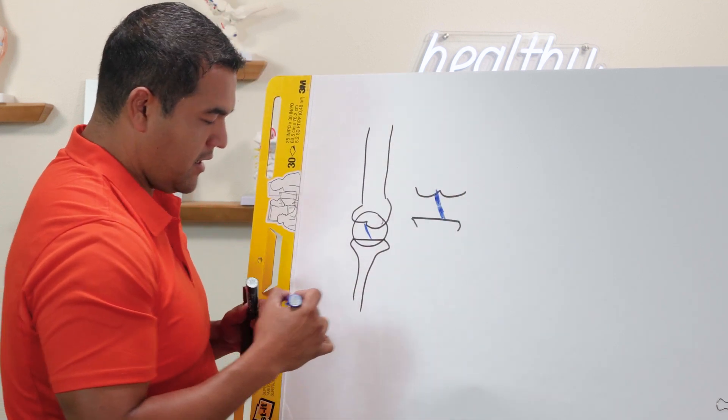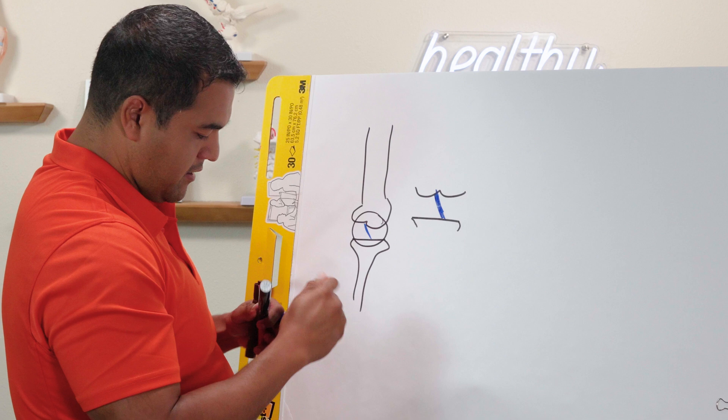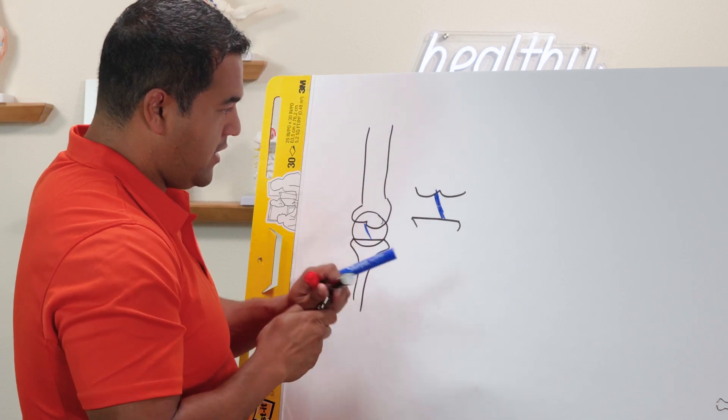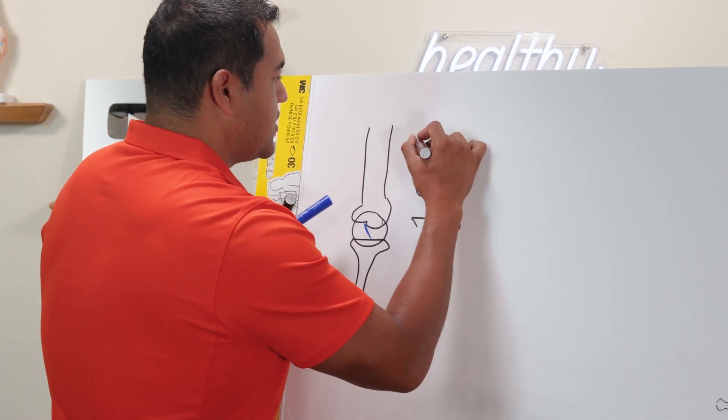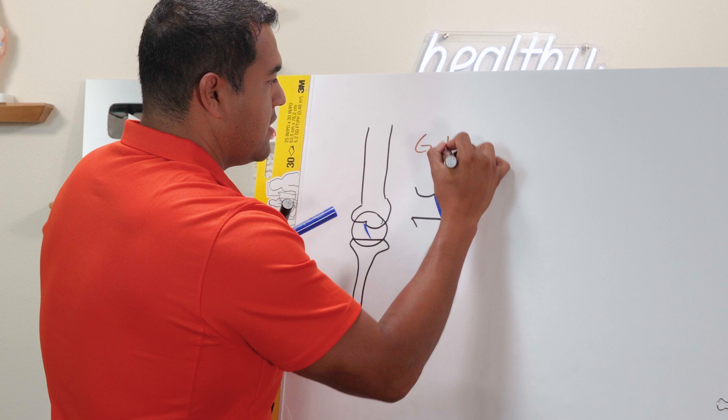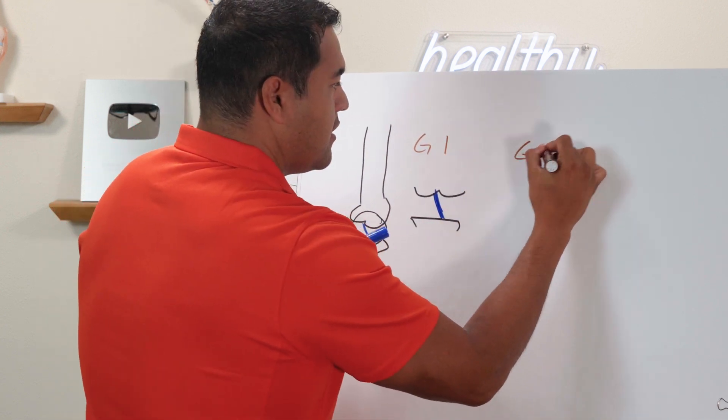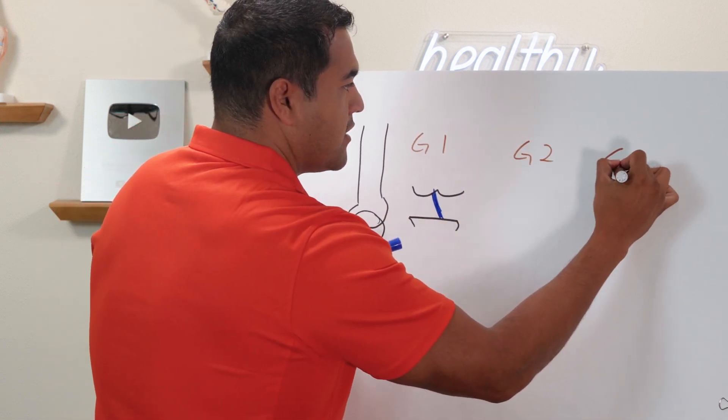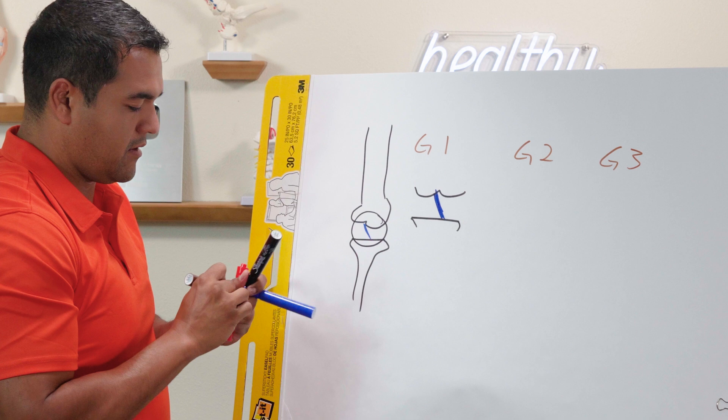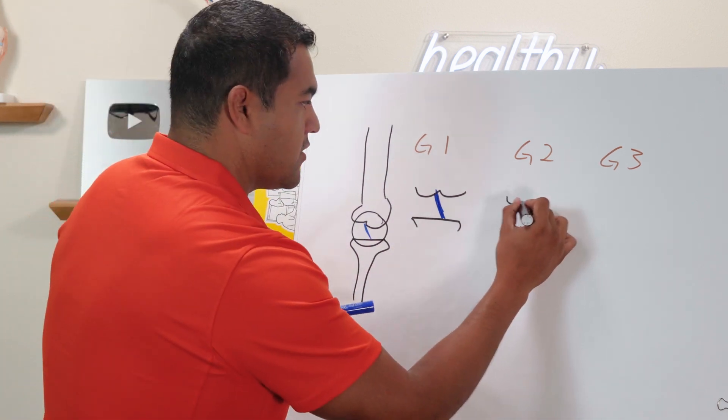It's a thick ligament and we're going to do grade one right here. There's grade one, grade two. I'm just going to write a G. Grade one, grade two, and grade three. Let's draw this a couple more times over here.